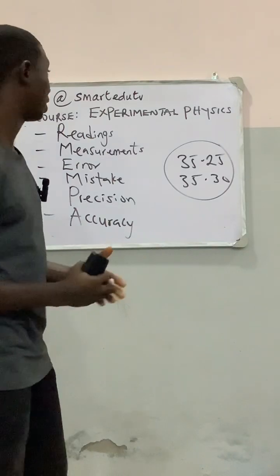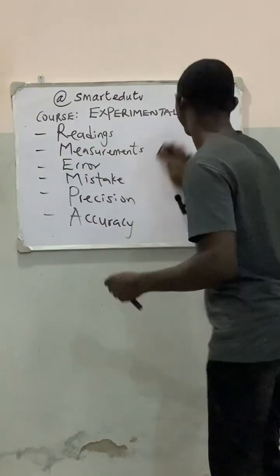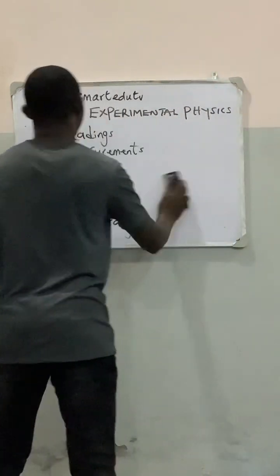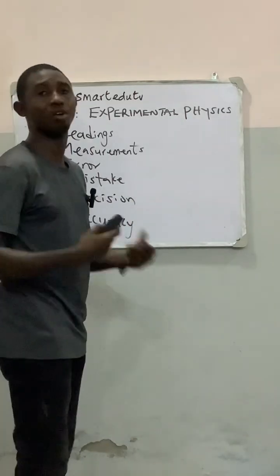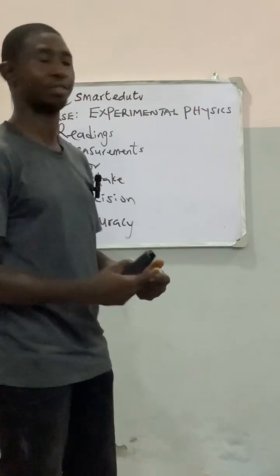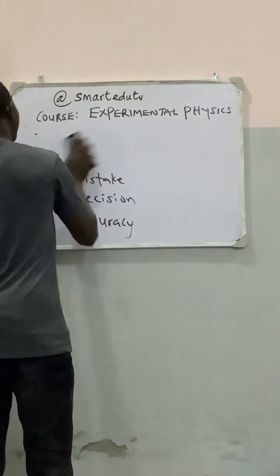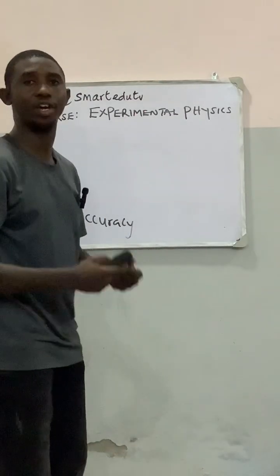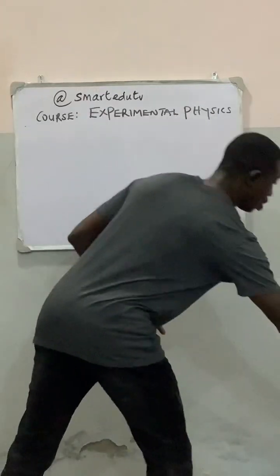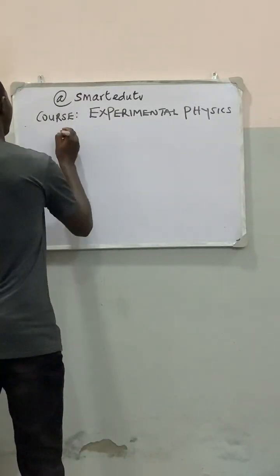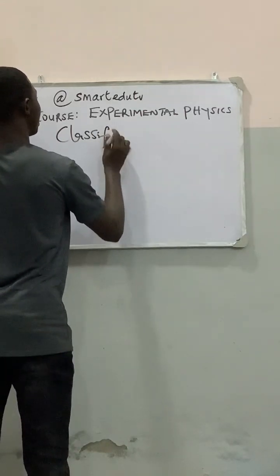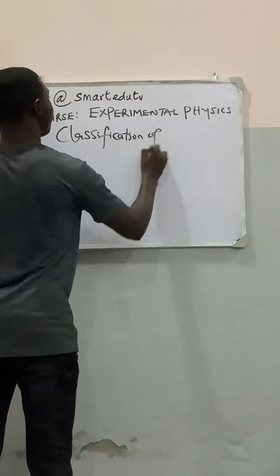So these are some of the terms we are going to encounter in experimental physics. Are we together? So the next we are going to look at, after understanding the basics of experimental physics, we are going to look at classification of errors. How do we classify errors in experimental physics?